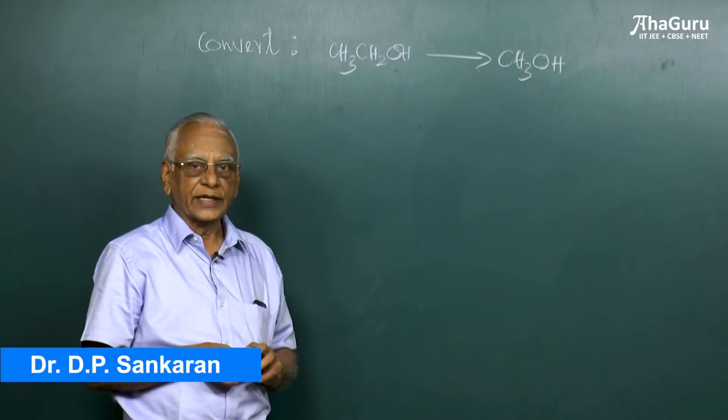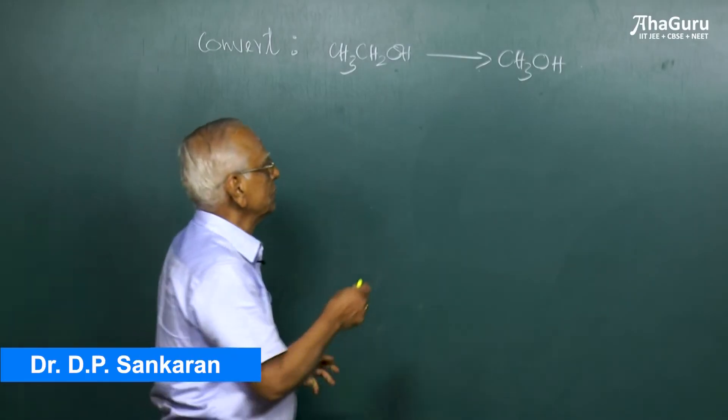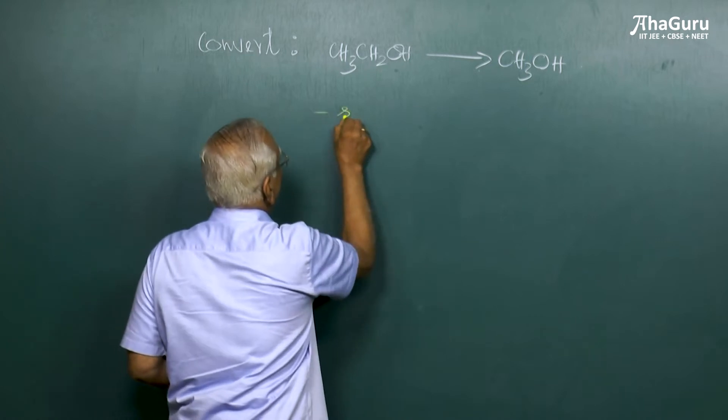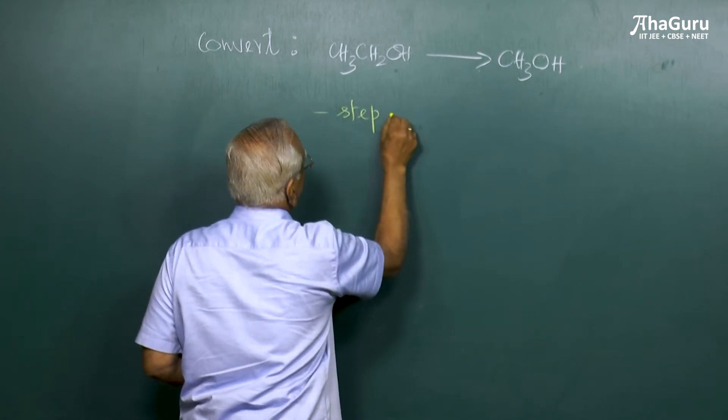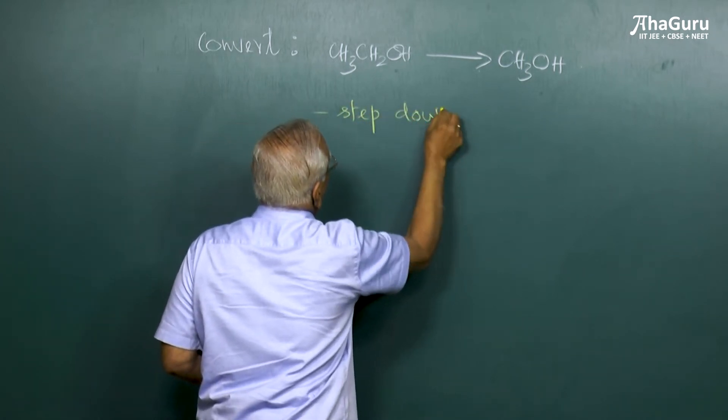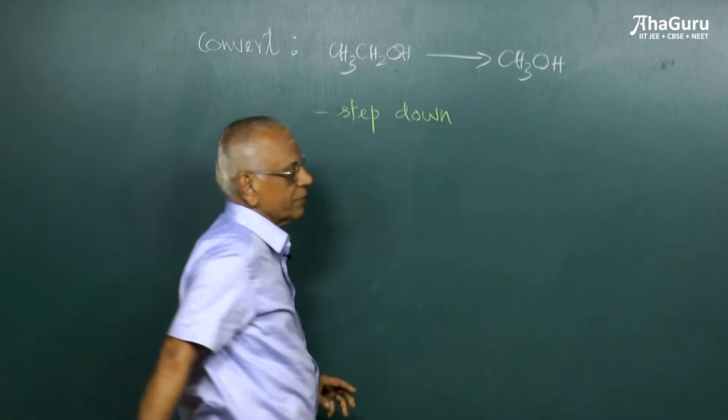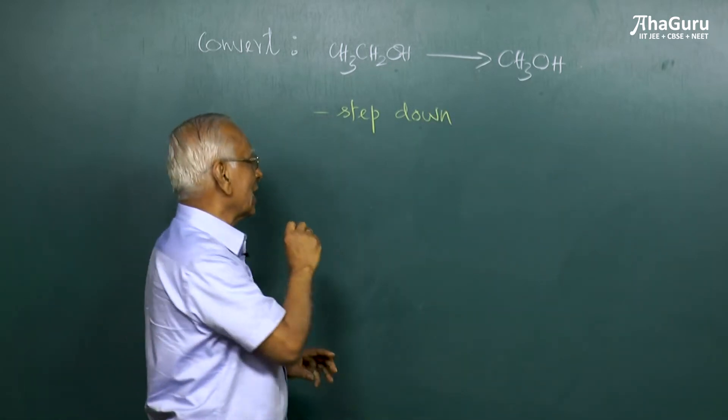We shall see the conversion of ethanol to methanol, and this is called a step-down process. Whenever you want to remove one carbon atom, how is one carbon atom removed?